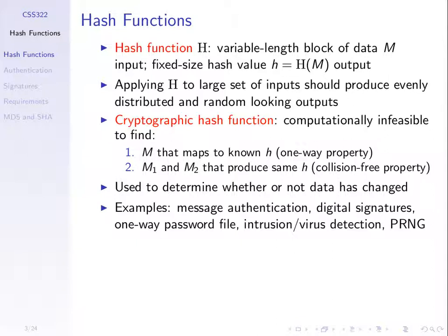Evenly distributed means that if we have, say, 1,000 possible inputs and 20 possible outputs, evenly distributed means that on average of those 1,000 inputs, 50 of them should map to one of the possible outputs, another 50 to one of the other outputs, and so on, such that an equal number map to each possible output. They don't all go to one value. And random looking means the output hash value we can think of as a random number.